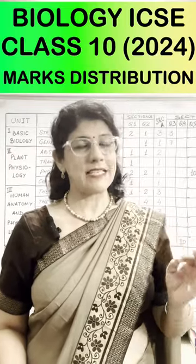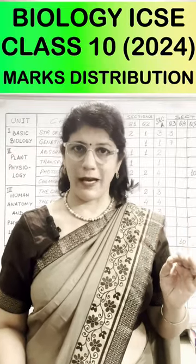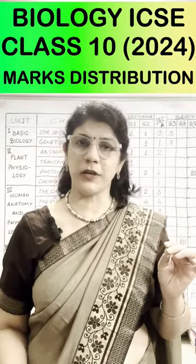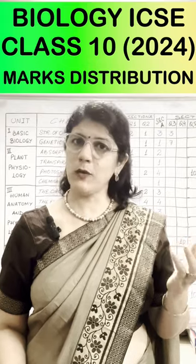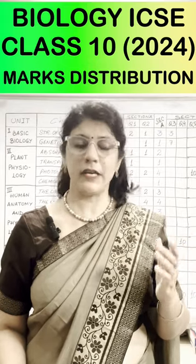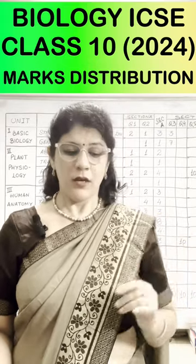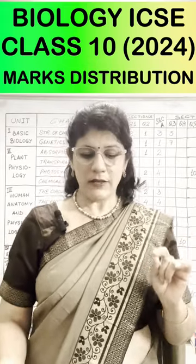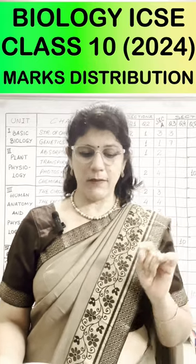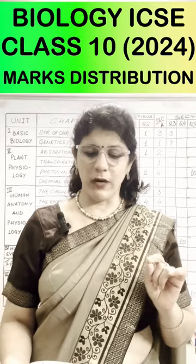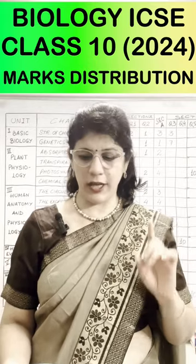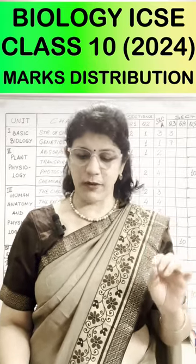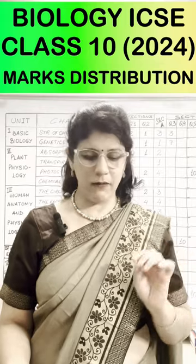Marks distribution for ICSC Claston Biology for the year 2023-24, according to the specimen paper released by CONEYST. Unit 1 Basic Biology: Cell Cycle 3 marks and Genetics 1 mark in Section A, then 17 marks in Section B — total 21 marks.